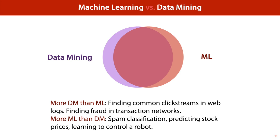In general, data mining focuses more on a given large database of data and finding patterns within it, such as done in data analytics in large companies. Machine learning focuses more on prediction tasks and understanding, and tends to focus more on the task than on the data itself. Things like finding common click streams in weblogs or finding fraud in transaction networks is generally a little bit more data mining than machine learning. Things like spam classification, stock prices, and learning to control a robot is more machine learning than data mining. But in general the two are very closely related and it's not always easy to say which is which.